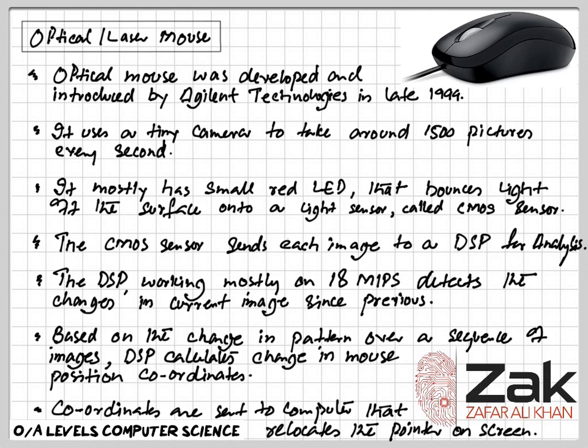The computer moves the cursor on the screen based on the coordinates received from the mouse. This happens hundreds of times each second, making the cursor appear to move very smoothly. That is what optical mouse working is about.